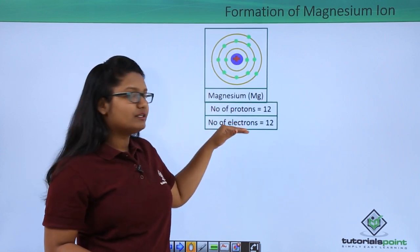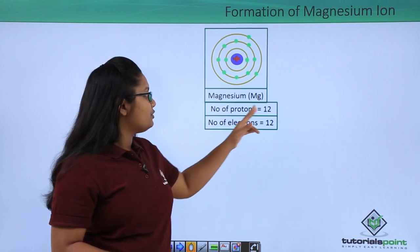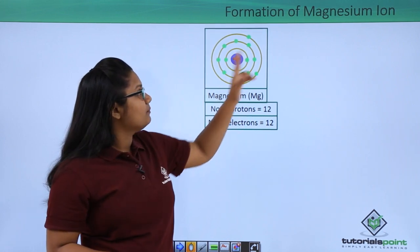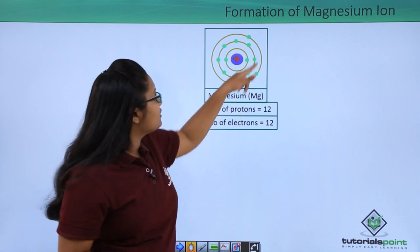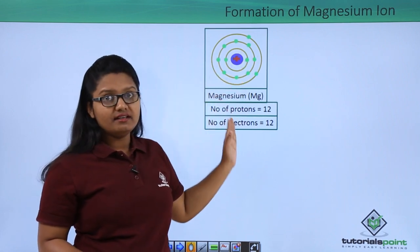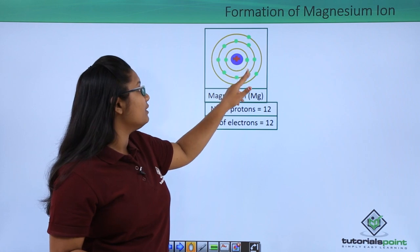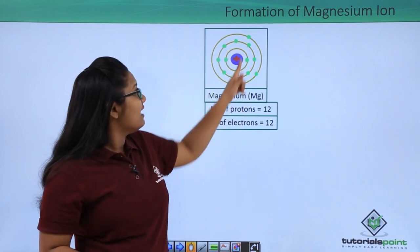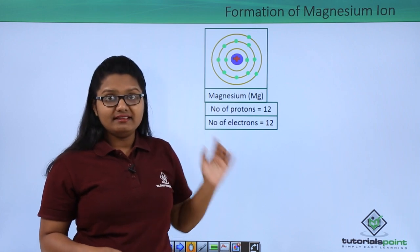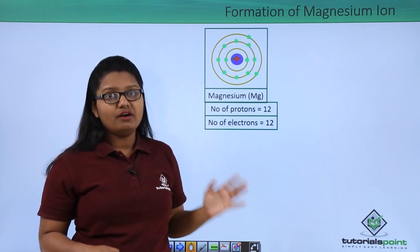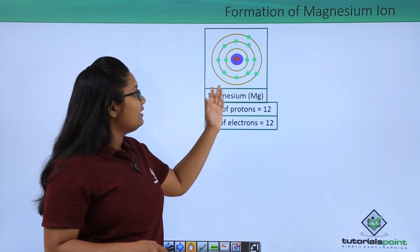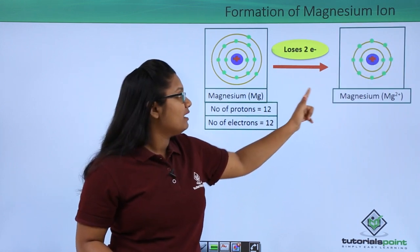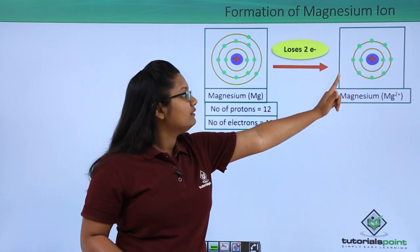A neutral magnesium atom has 12 protons and 12 electrons which nullify each other. These 12 electrons are arranged in three shells. The two inner shells are completely filled, whereas the outer shell has only two electrons and is not completely filled. So the magnesium atom loses these two extra electrons.